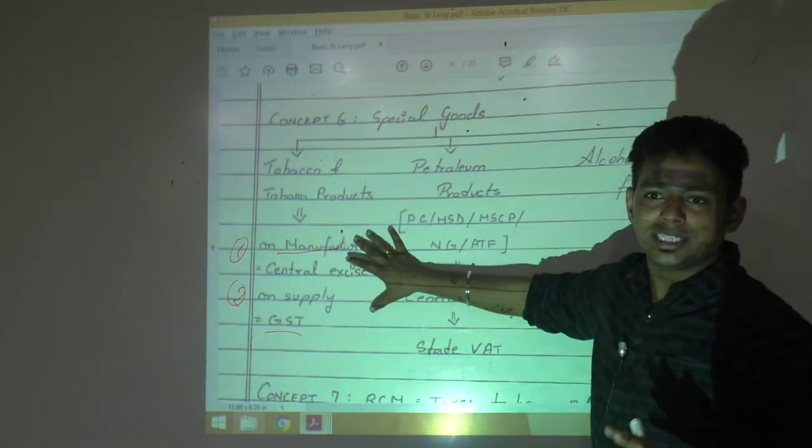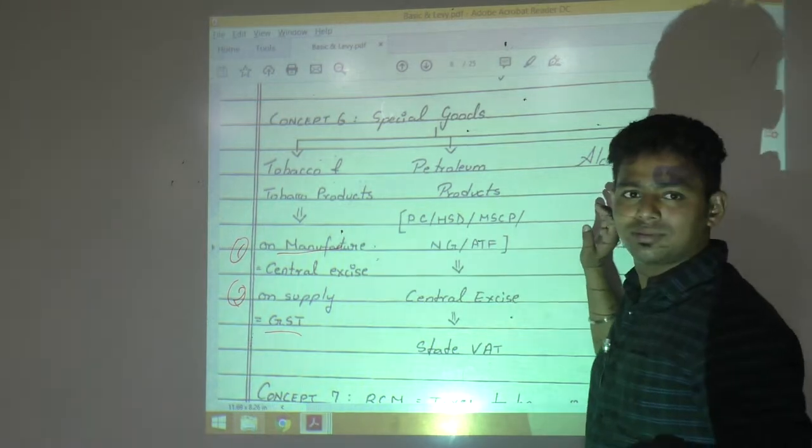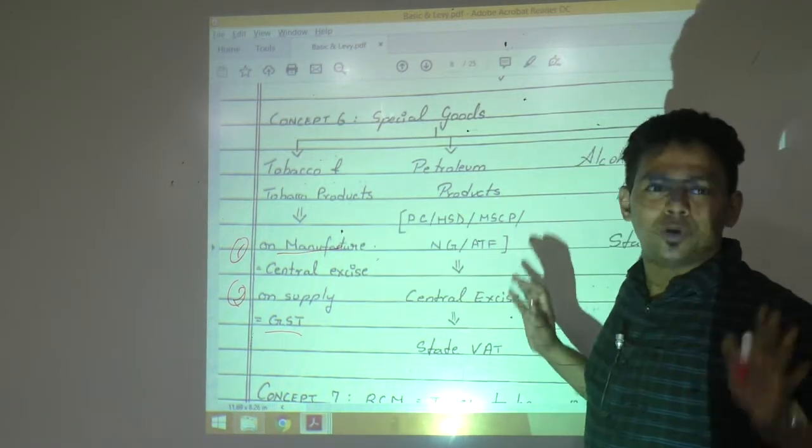Tobacco is 100% with central, manufacture at least, yes or no? Alcohol is 100% with state. Petrol is with both.